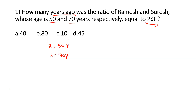We are given four options. We'll try out each option and find the ratio. If it turns out to be 2 is to 3, we return that as the answer. Let's try option A, which is 40 years. The current ages of Ramesh and Suresh are 50 and 70. So 50 minus 40 is 10, and 70 minus 40 is 30. The ratio is 10 to 30, which is 1 is to 3 — not equal to 2 is to 3. So option A is not the right answer.